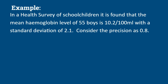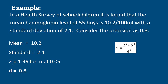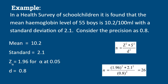Here is the example for calculation of sample size for estimation of mean. In a health survey of school children, the mean hemoglobin level of 55 boys is 10.2 per 100 ml, with a standard deviation of 2.1. Consider the precision as 0.8. So mean is 10.2, standard deviation is 2.1, z-value is 1.96, and d is 0.8. The formula is N = Z² × SD² / precision². Substituting the values gives 26 as the sample size.